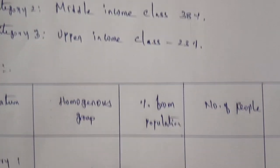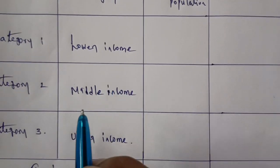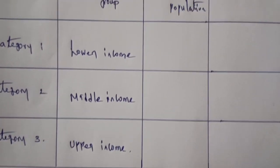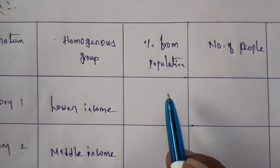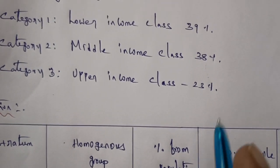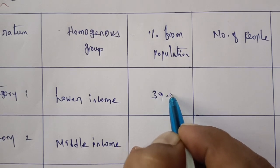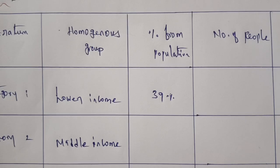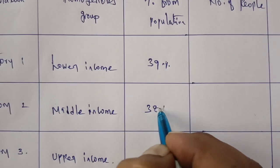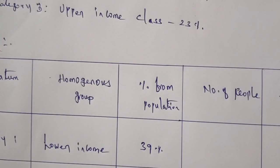Category 1 is lower income, category 2 is middle income, and category 3 is upper income. The percentages from the population are: lower income is 39%, middle income is 38%, and upper income is 23%.